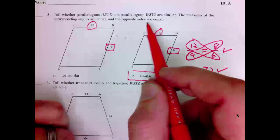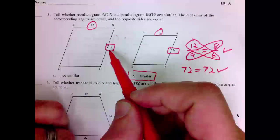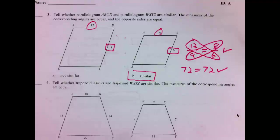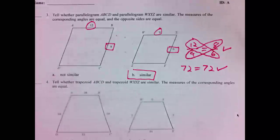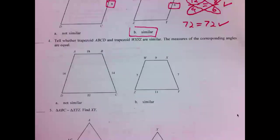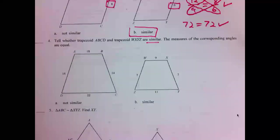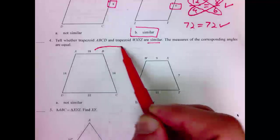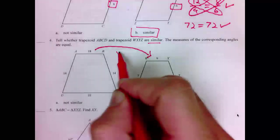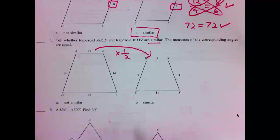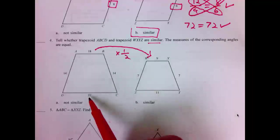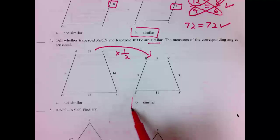To get from 12 to 9, we would multiply by 3/4. Same thing from 8 to 6. 12 over 9 and 8 over 6 are equivalent fractions. They both reduce to 4 thirds. Number 3 is B. Number 4. We want to tell whether they are similar. Again, we're looking for are they the same proportion. This one's pretty easy to see without setting up the proportion. 18 to 9, times 1 half. We just want to see are all the other sides times 1 half. 14 times 1 half will give 7. 22 times 1 half will give 11. These two figures are similar. Number 4 is B.